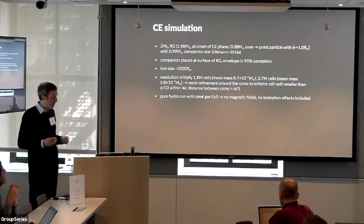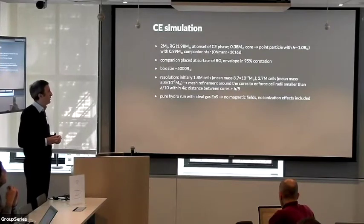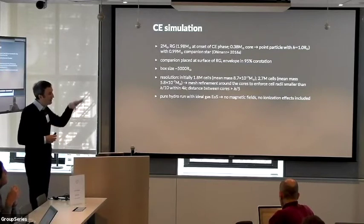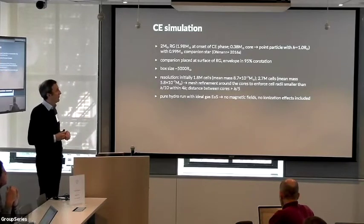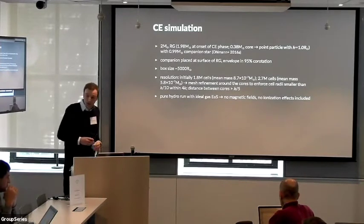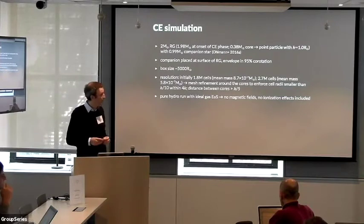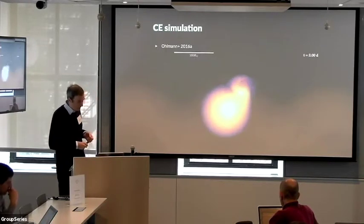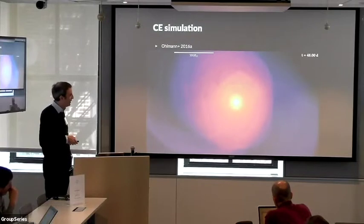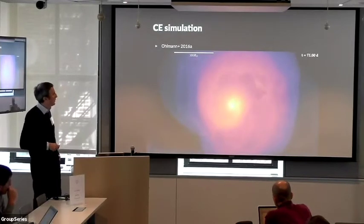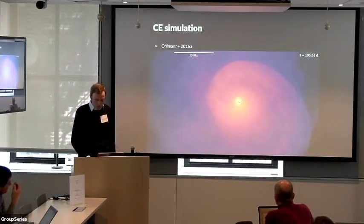Now, with these set of models, Sebastian has performed common envelope simulations. Its standard showcase example is a two-solar mass red giant and a one-solar mass companion star. The companion in many of the simulations was placed at the surface of the giant, but Sebastian also tested different other initial setups. In the first set of models, we modeled pure hydro with an ideal gas equation of state, so that means no hydrogen recombination, no magnetic fields involved and no ionization effects. And then the simulations look like here. So, this is the cut to the xy plane and you see the two cores orbiting each other indicated by the plus signs here.